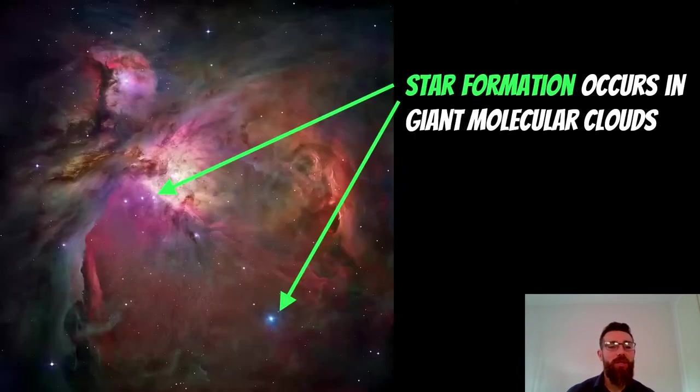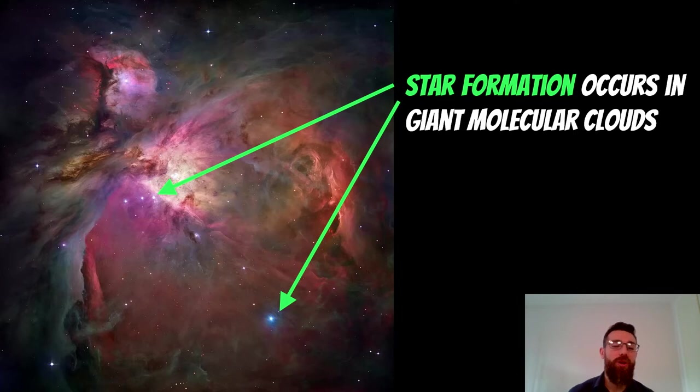And then when we look a bit closer, this is the Orion Nebula and we've got bright blue stars in there, which are young, newly formed stars, and they are formed within these sorts of clouds. So we know that star formation is occurring in these molecular clouds. This is the assumption we're making when we're doing our derivation.